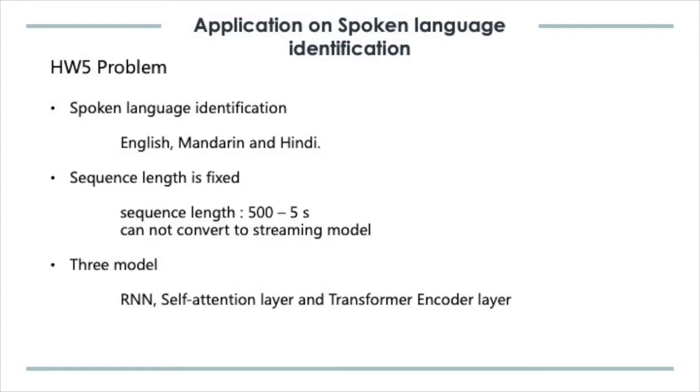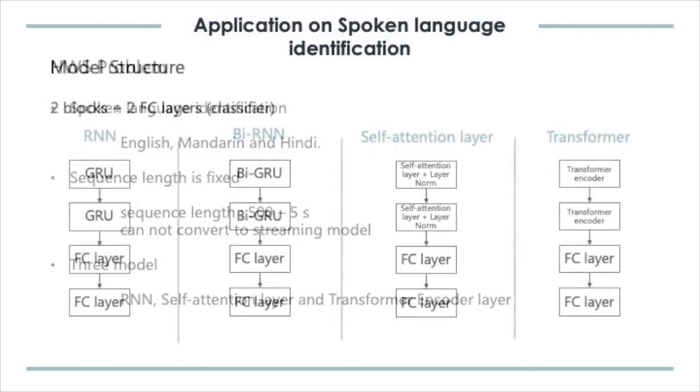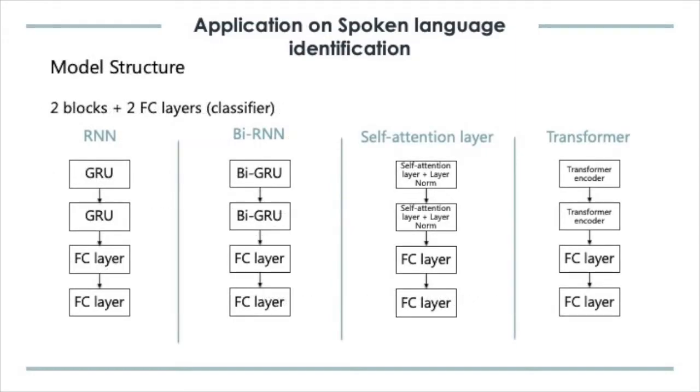We train three types of models: RNN models, model with only self-attention layers, and transformer with encoder layers. Since we fixed the sequence length, we didn't consider this as a real-time signal processing problem. Each model has four blocks, and the last two blocks are just two fully connected layers that serve as classifiers.